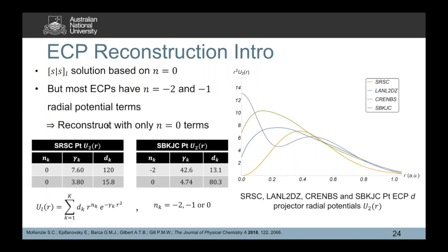Now I need to talk about ECP reconstruction. Recall that radial potentials can have radial powers of r to the negative 2, r to the negative 1, and r to the 0. When they only include r to the 0 terms, you have the beautiful simple expression for the fundamental integral. But many ECPs do have r to the negative 2 and r to the negative 1 factors in their radial potential terms. So how can we use our new fast and efficient ECP method on these ECPs? We do that by reconstructing those ECPs to only have r to the 0 terms.